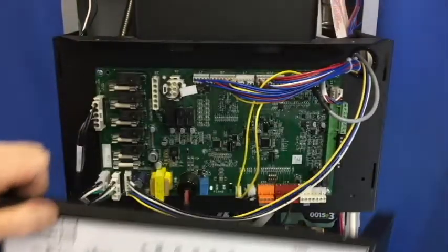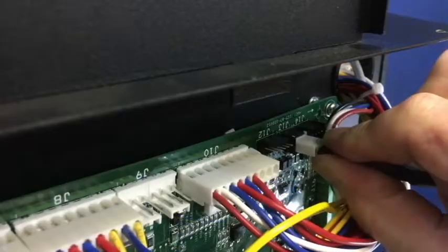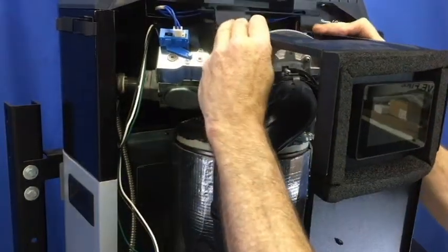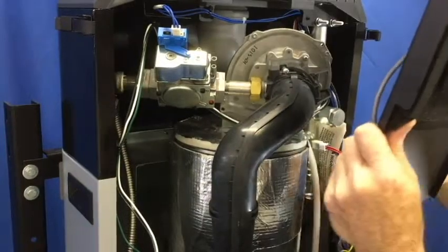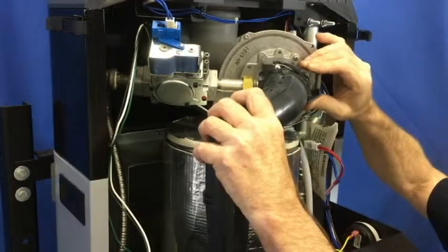After removing the door and control bracket, unplug the display and set it in a safe place. Next we will remove the components in the order listed in the manual.